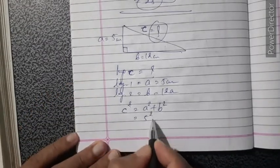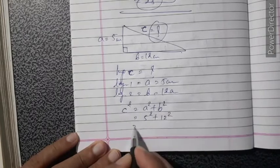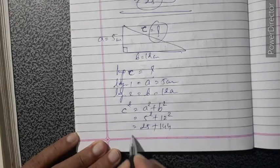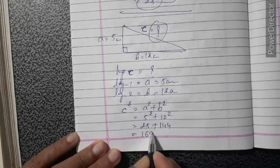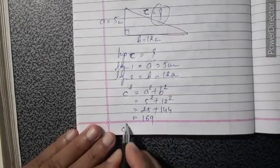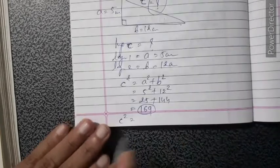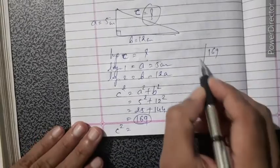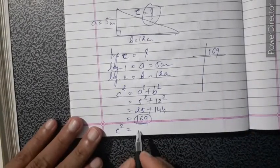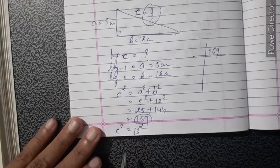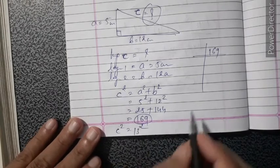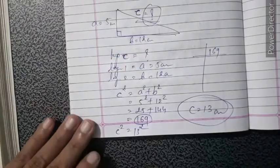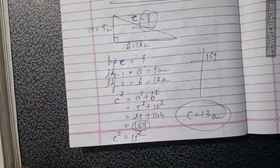c² = a² + b² = 5² + 12² = 25 + 144 = 169. So c² = 169 = 13². Removing the square from both sides gives c = 13 cm. Therefore, the measurement of the hypotenuse is 13 cm.